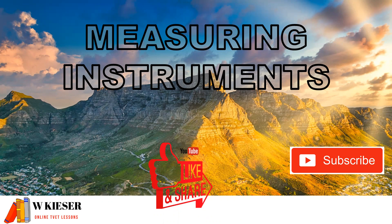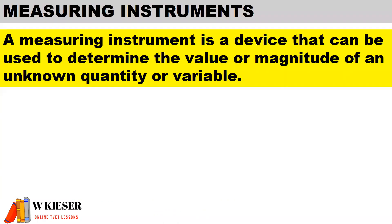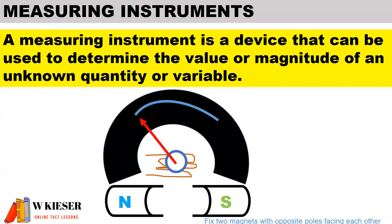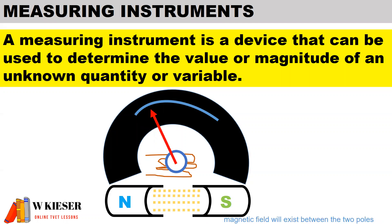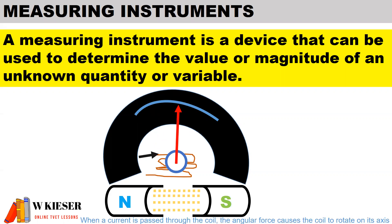A measuring instrument is a device that can be used to determine the value or magnitude of an unknown quantity or variable. In this example we have a moving coil instrument with two permanent magnets — a north pole and a south pole. Under normal conditions, lines of flux are running from north to south. When current passes through the coil it generates a magnetic field, and this angular force causes the coil to rotate on its axis.